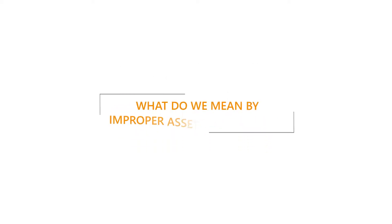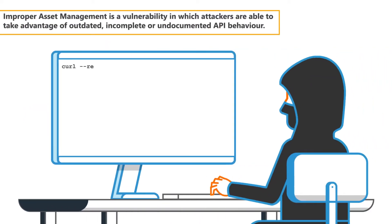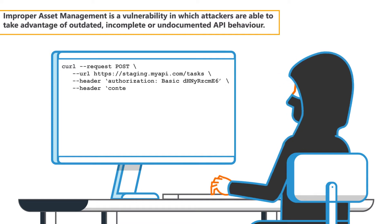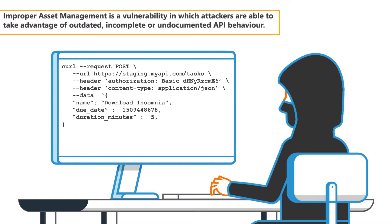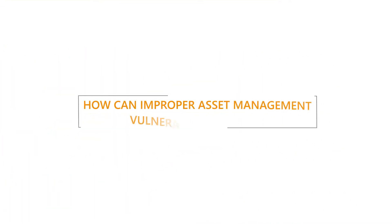What do we mean by improper asset management? Improper asset management is a vulnerability in which attackers are able to take advantage of outdated, incomplete, or undocumented API behaviour.